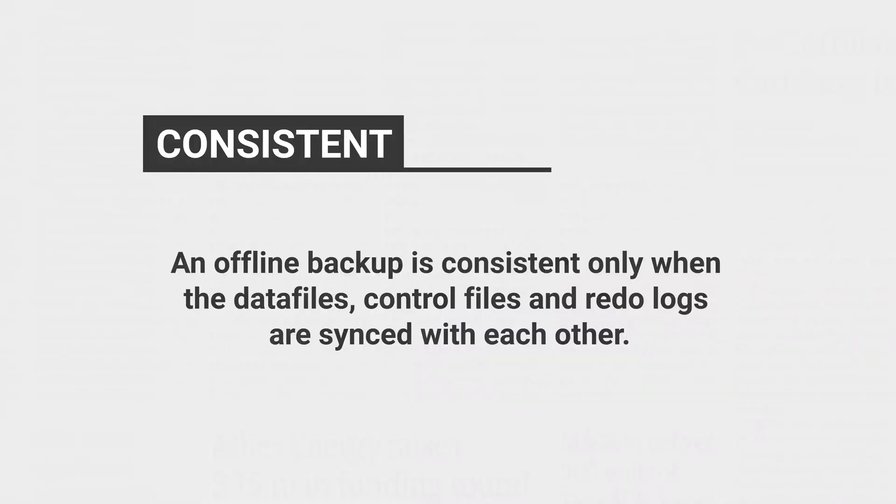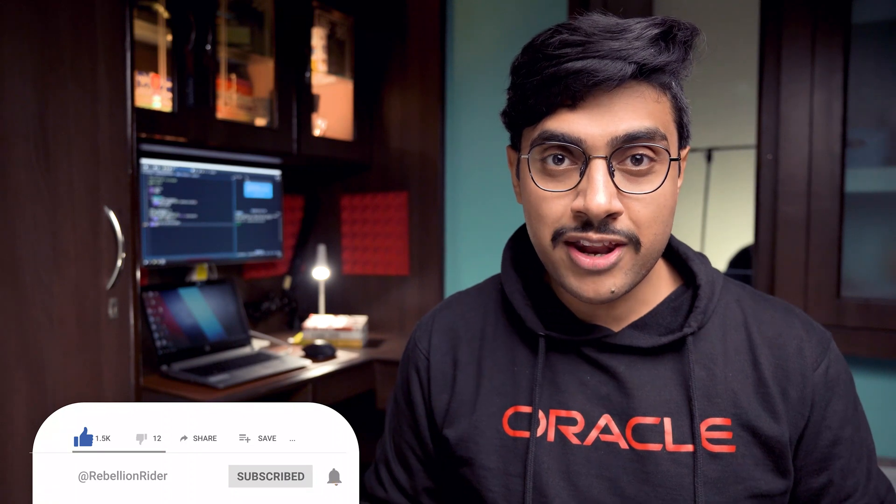You must be wondering — since we perform the backup while the database instance is down, thus it should be consistent. An offline backup can be called consistent only when the data file, control file, and redo logs are synced with each other when you shut down the database. And this happens only when the database is shut down in a proper manner. But in case the database is shut down in an incorrect manner by the shutdown abort command, then data files, redo log files, and control files are not synced with each other. Thus calling an offline backup of a database whose operations aborted abruptly 'consistent' would be wrong.